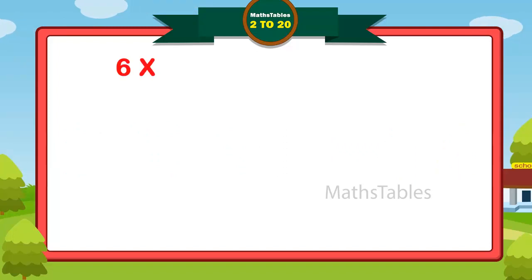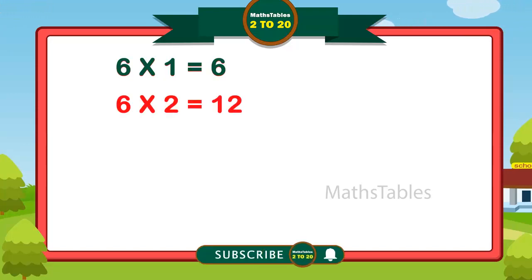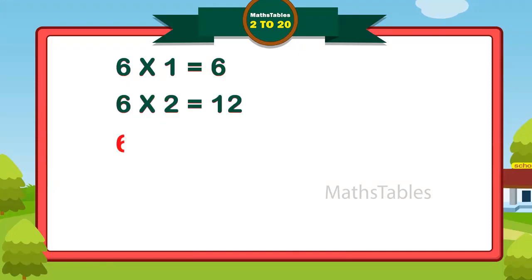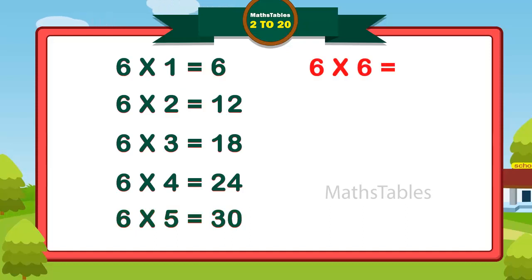6 ones are 6. 6 twos are 12. 6 threes are 18. 6 fours are 24. 6 fives are 30. 6 sixes are 36.